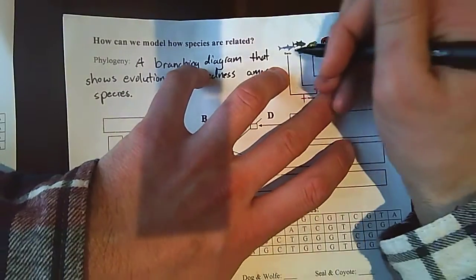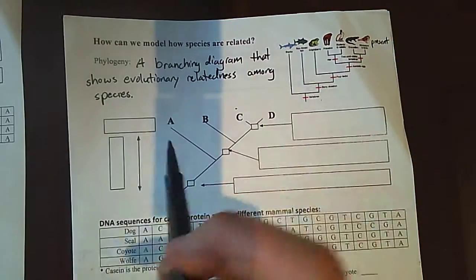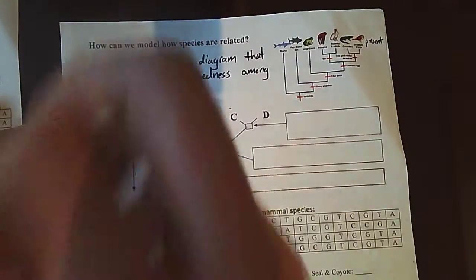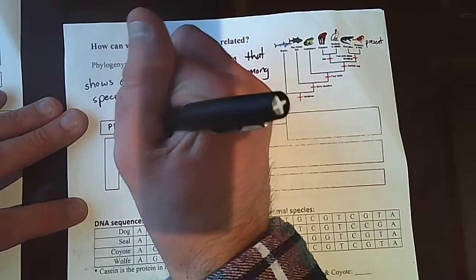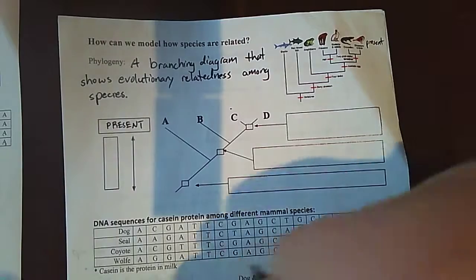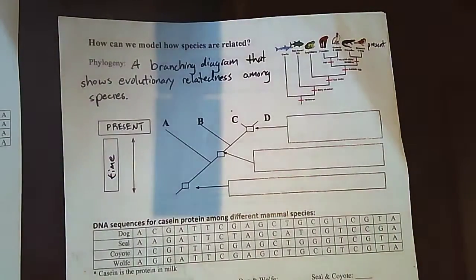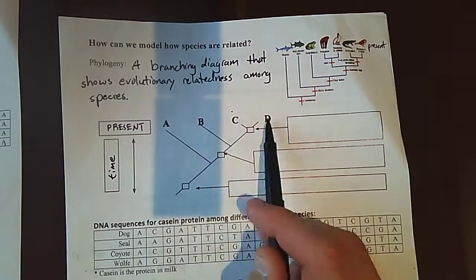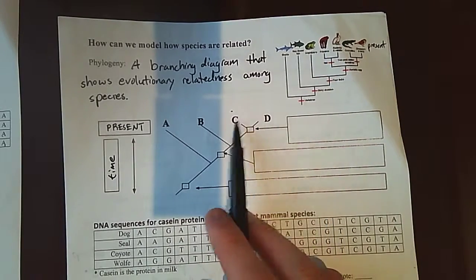So we would say that these are all living organisms right here. So this would be present day. So in our just general model of phylogeny right here, we would say that this is the present. So that means vertically, up and down, this is time in general. So the further we go down, the further we're going back in time. Then we have organisms like A, B, C, D.